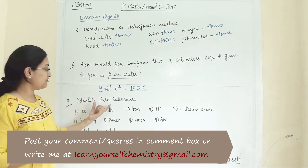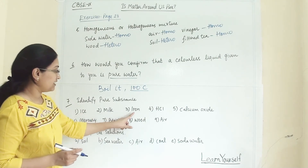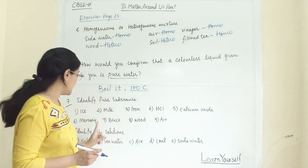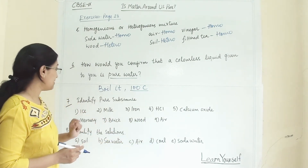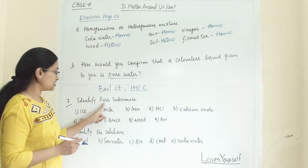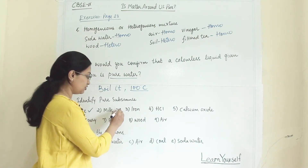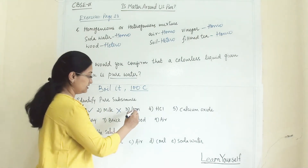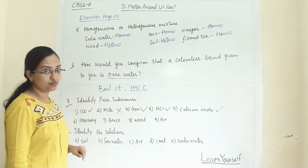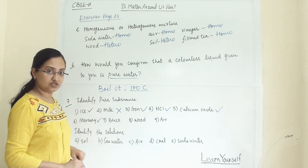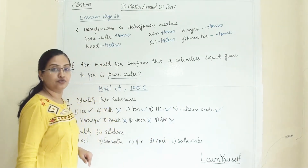Identify pure substances from the following: ice, milk, iron, hydrochloric acid, calcium oxide, mercury, brick, wood, and air. Ice is a pure substance. Milk is not. Iron, hydrochloric acid, and calcium oxide are all pure substances. Mercury is a pure substance. Brick, wood, and air are not pure substances.